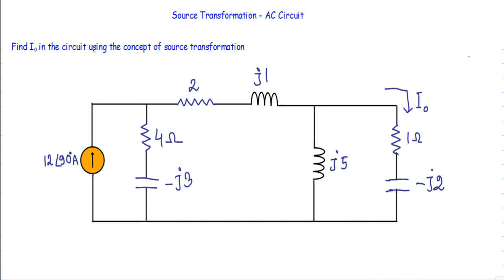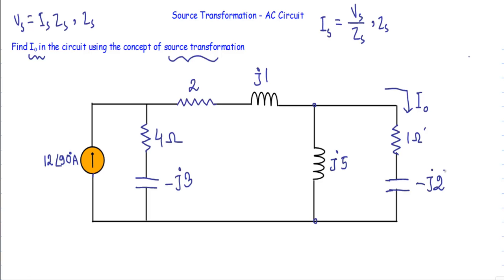So this is our circuit. In this circuit, we have to find I₀ using the concept of source transformation theorem. I₀ is the current flowing through the branch containing a 1 ohm resistor and a capacitive reactance of minus J2. Whenever we apply source transformation theorem, we leave the branch of interest intact — I will not work with this portion, and will work with the rest of the circuit during simplification.